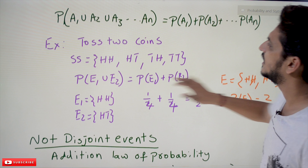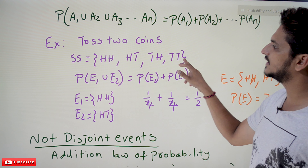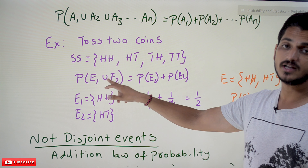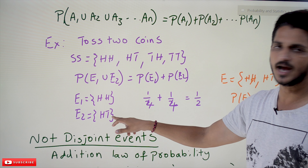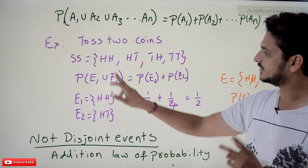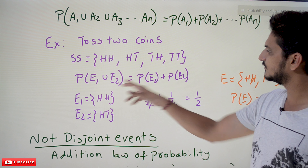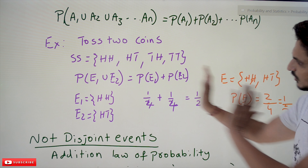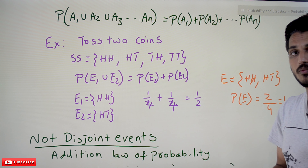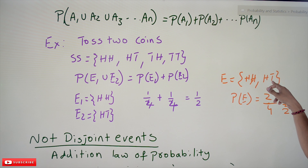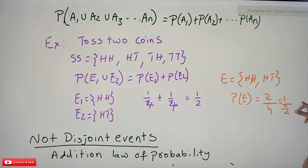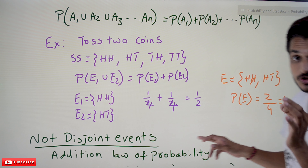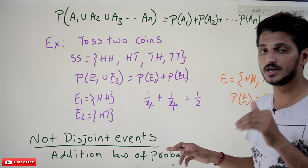Example: toss two coins, sample space is {HH, HT, TH, TT}. E1 is HH and E2 is HT. Probability of E1 ∪ E2 equals probability of E1 plus probability of E2 = 1/4 + 1/4 = 1/2. Without this equation, probability of E1 or E2 means {HH, HT} — 2 out of 4, which equals 1/2. We get the same result. This works because they are disjoint sets.